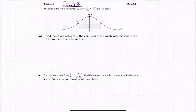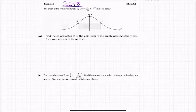Question 8 on the 2018 paper for Leaving Cert Higher Level was a bit of a mix but predominantly calculus. The graph of the symmetric function f(x) = 1 over root 2π · e to the minus a half x squared is shown below.